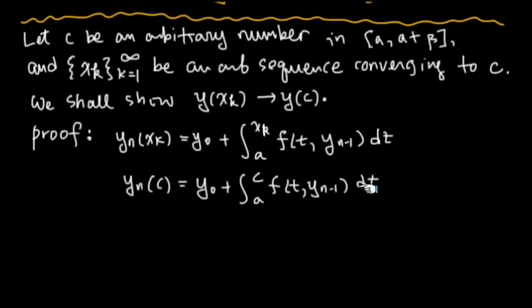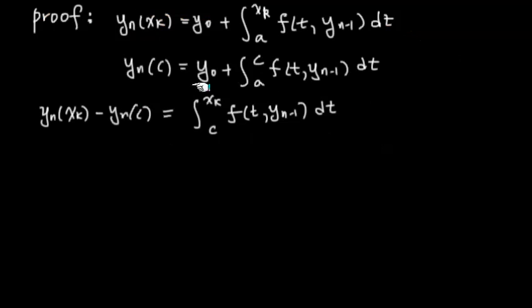This time when you subtract these two, the function is the same and the limits are different. When I subtract these two, the y_0 cancels and here's the same function. By extended definition of integral, whether x_k is greater than c or not, you can always write it like this with a positive sign out there.